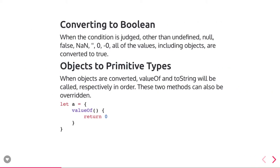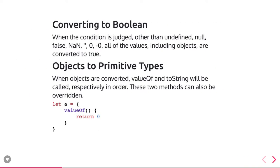Converting to boolean - whenever you do if expressions, values can be judged based on the condition. You can check all these things: undefined, null, false, NaN, 0, minus 0 - all these values are falsy. Objects and other values are converted to true.